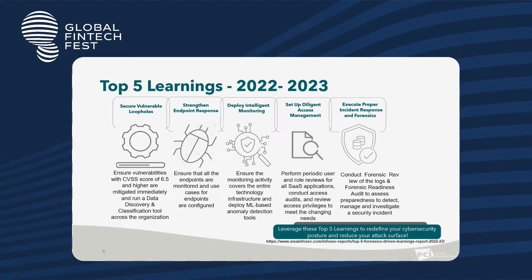The fourth learning is setting up diligent access management — performing periodic reviews on your applications and conducting proper audits; access management is critical. The fifth is executing a proper incident response plan — understanding what next steps to take if something goes wrong, and having incident response and forensics capabilities built within the organization's teams to help secure the payment infrastructure.